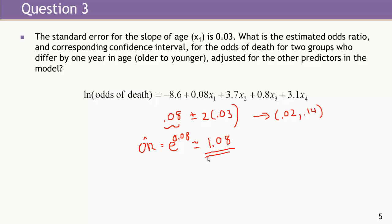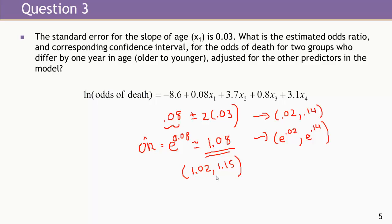The confidence interval for this odds ratio is e to the 0.02 equals 1.02 to e to the 0.14 equals 1.15. This result is statistically significant — the confidence interval for the slope did not include zero, and hence the confidence interval for the odds ratio does not include one. Age could be associated with anywhere from a 2% to a 15% increase in the odds of death per year, though with only 106 patients there is a fair amount of uncertainty.